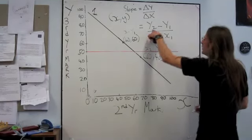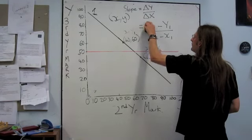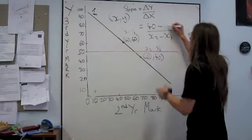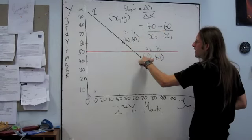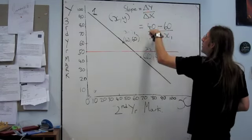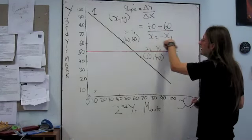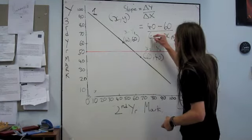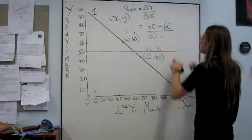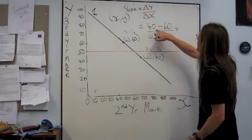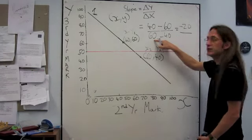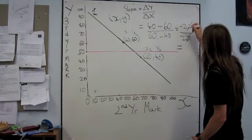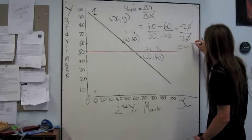So y2 is equal to 40, y1 is equal to 60. So if we subtract one from the other, that's telling us how much y is changing from this point to this point, the change in y. So 40 minus 60, and then underneath the line, x2 is going to be 60, and x1 is going to be 40. And if we work this out, 40 minus 60 is minus 20, and 60 minus 40 is 20. And we can just cancel this down. This is going to be 2 divided by 2 with a minus sign, so it's going to be equal to minus 1.